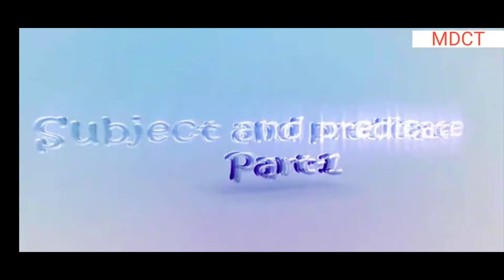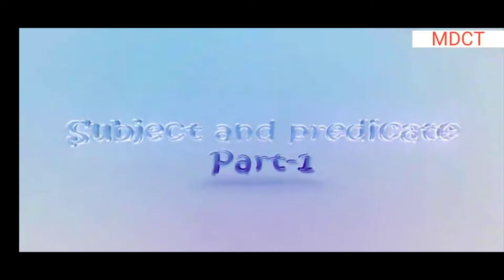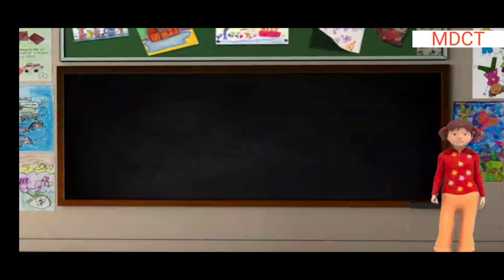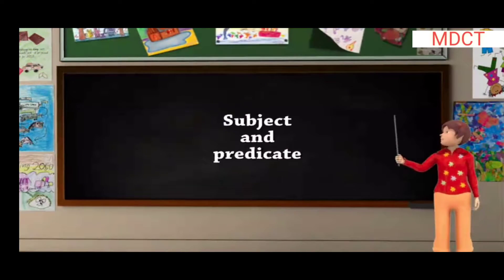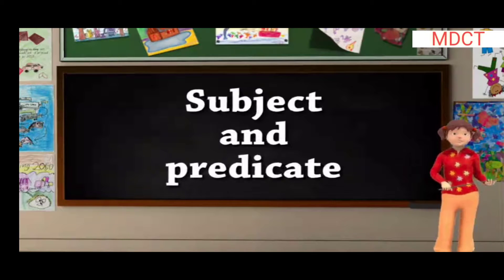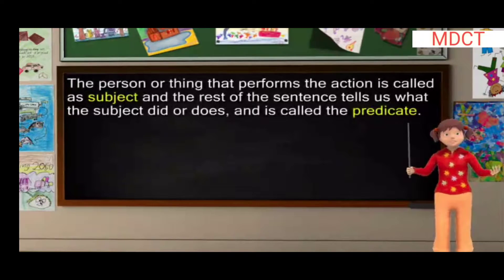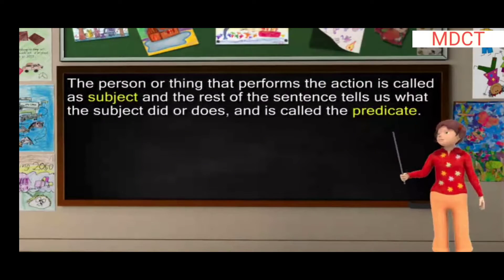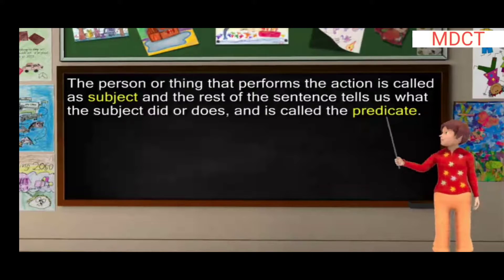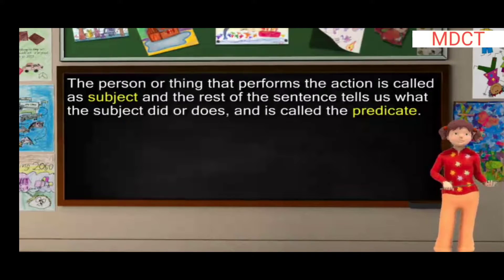Subject and Predicate, Part 1. Children, in the earlier modules, we have learned about subject and predicate. We know that in the sentence, the person or thing that performs the action is called the subject, and the rest of the sentence tells us what the subject did or does, and is called the predicate.